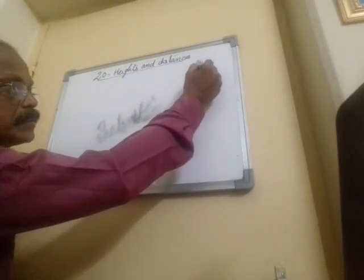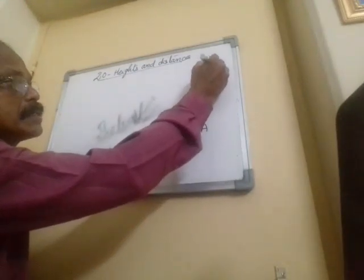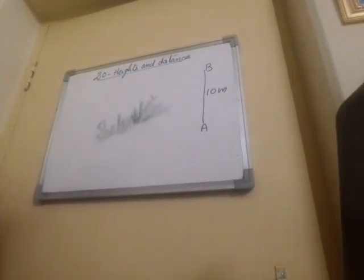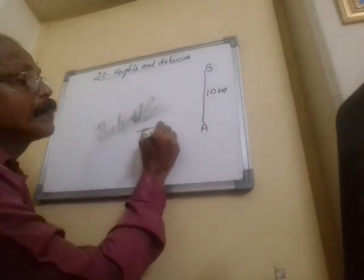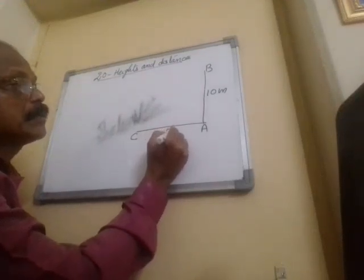Using trigonometric identities, let's see the first question. An electric pole is 10 meters high. If its shadow is 10 root 3 meters in length, find the elevation of the sun. Here, one electric pole is given that is 10 meters in height, so we are taking AB as the electric pole with height 10 meters. AC is its shadow, and the length is 10 root 3 meters.